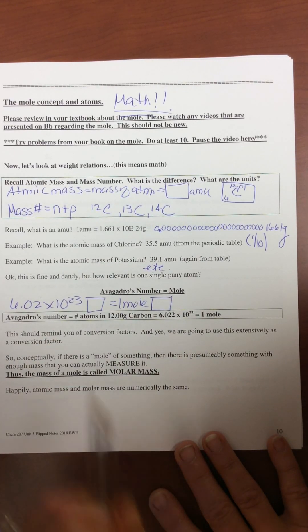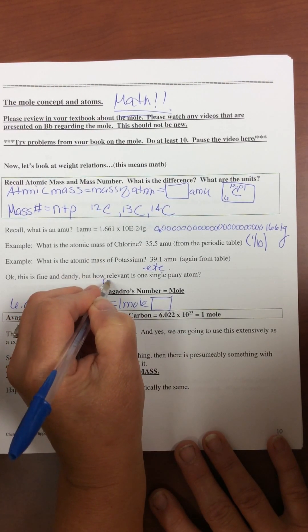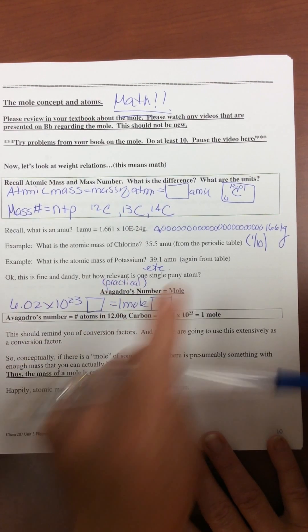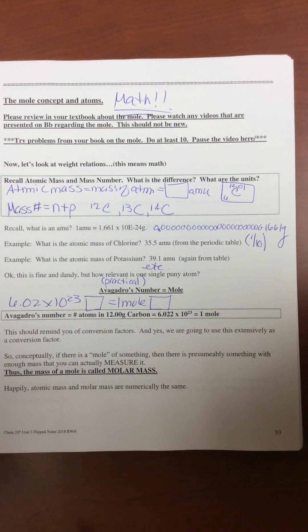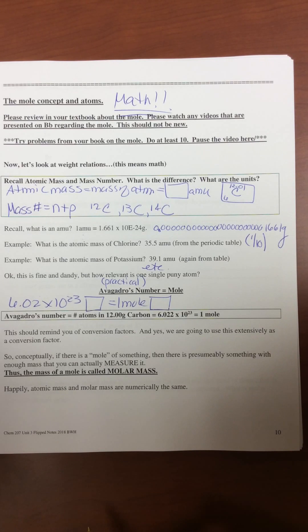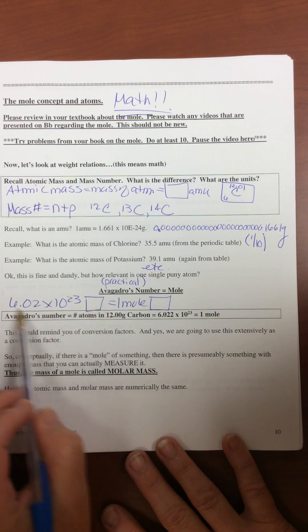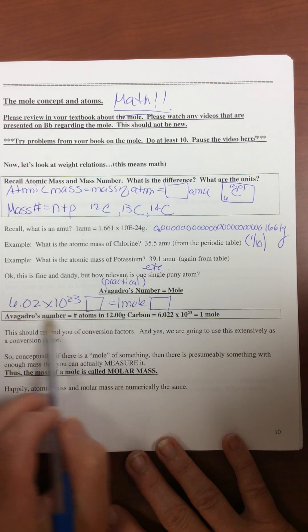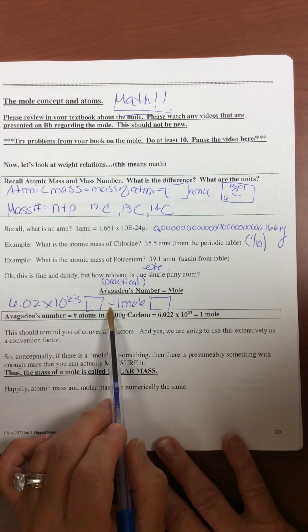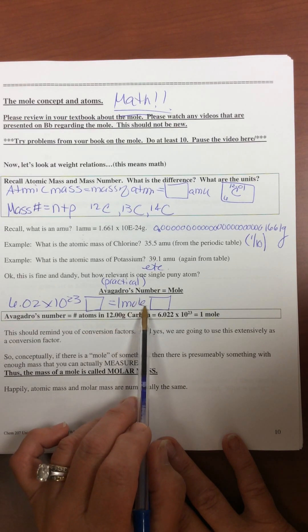But how relevant, or should I say practical, is one puny atom? Well that's rhetorical. It's not. So what you need to do is multiply up and get a huge pile of them so that you have something that's going to have some mass. And that will be a mole of that whatever.